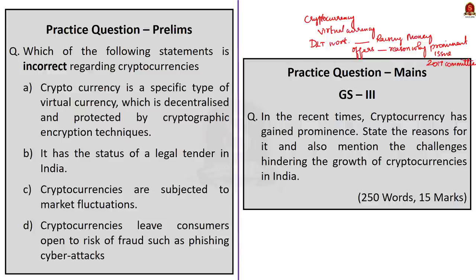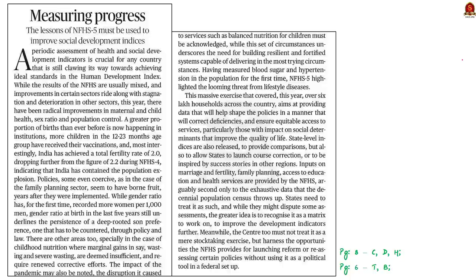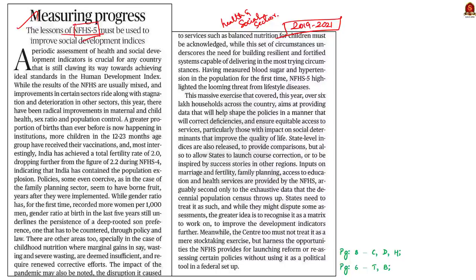Our next discussion is based on an editorial providing a comprehensive picture of the findings of the National Family Health Survey 5, or NFHS-5. It mentions the gains and losses made in the health and social sector. NFHS-5 is the fifth in the NFHS series and covers the period 2019 to 2021. It provides information on population, health, and nutrition available for India at state, union territory, and even district level. Today we focus on the health-related findings.